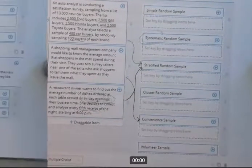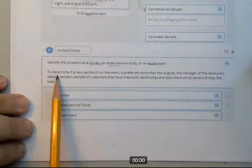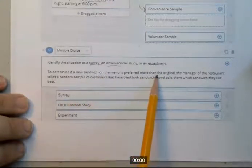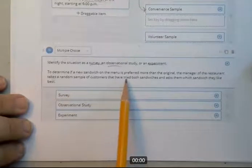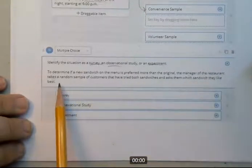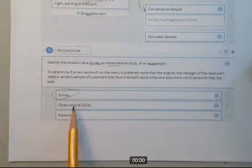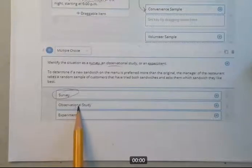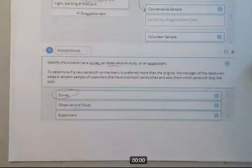They want to know survey, observational or experiment. To determine if a new sandwich on the menu is preferred more than the original, the manager of the restaurant takes a random sample of customers that have tried both sandwiches and asks them which sandwich they like best. Well, that's clearly a survey. They're asking opinions. He can't tell just by watching them eat the two sandwiches, which one they liked the best. And you know, they're not going to jump up and down with the one they liked the best. So he can't do it observational and experiment. He's not really setting up an experiment. He's just watching. He's just asking them. So it's not really an experiment. It's actually a real world situation. So that would be a survey.